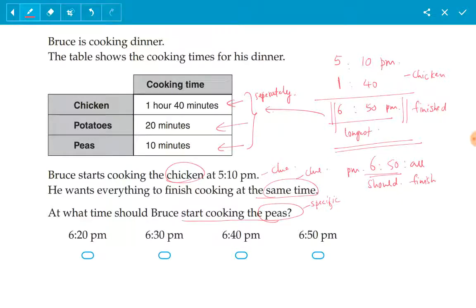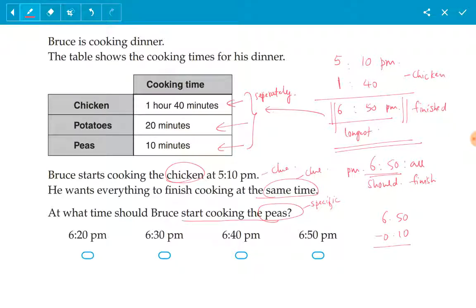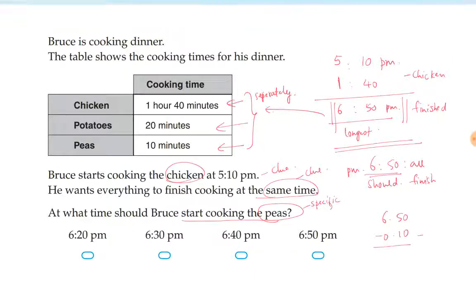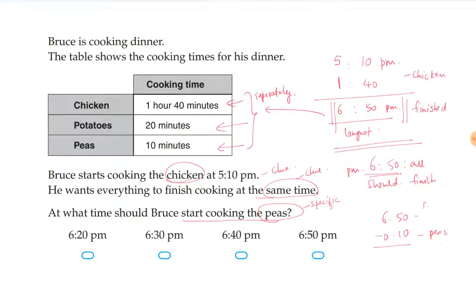If we have 6:50 PM as the final finishing time, we can simply take the peas and subtract the time it takes to cook the peas from the finishing time to give us the starting time for the peas, which should give us 6:40 PM as the start cooking time for peas.